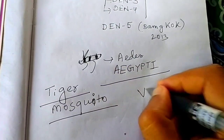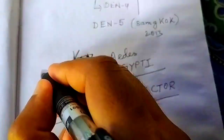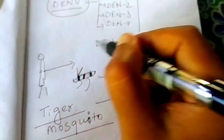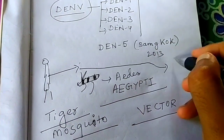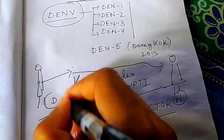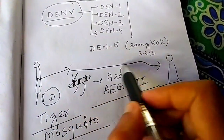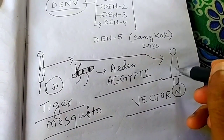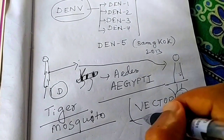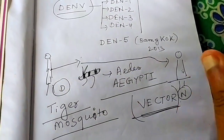Now this mosquito acts as a vector. What do you mean by vector? Vector means this mosquito carries this disease from a diseased person and carries it to a normal person. From the diseased person it sucks the blood, and in the blood there is DENV virus. Then it carries it to a normal person and the normal person gets DENV. So in this way they act as a vector — vector means carrying.